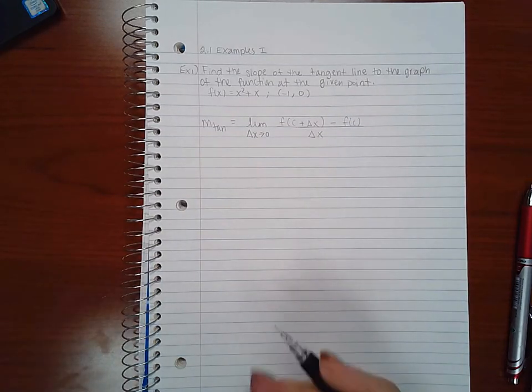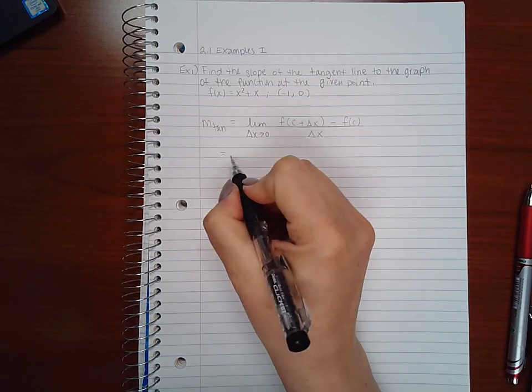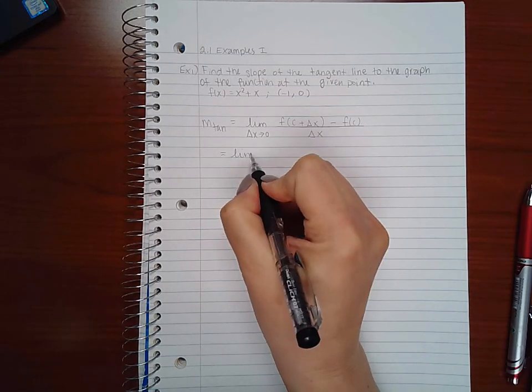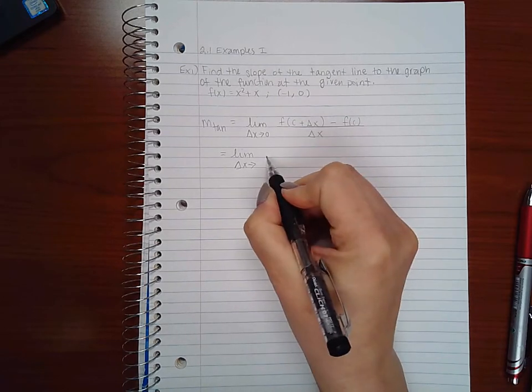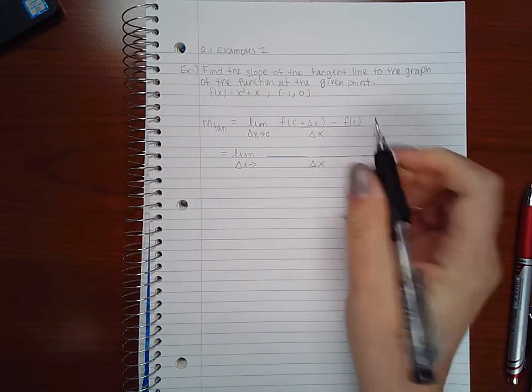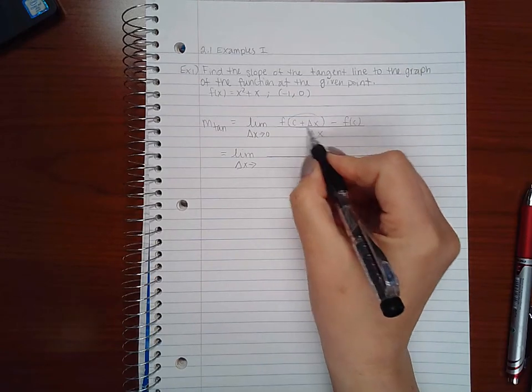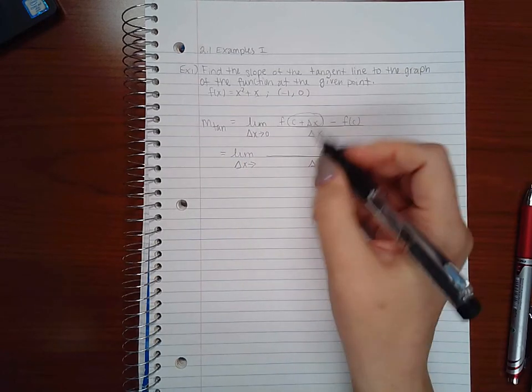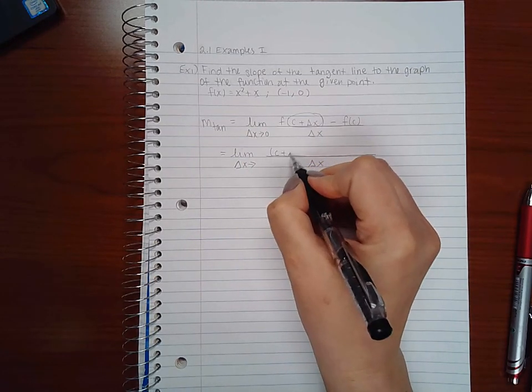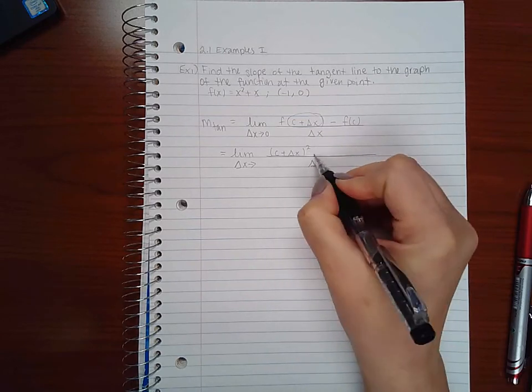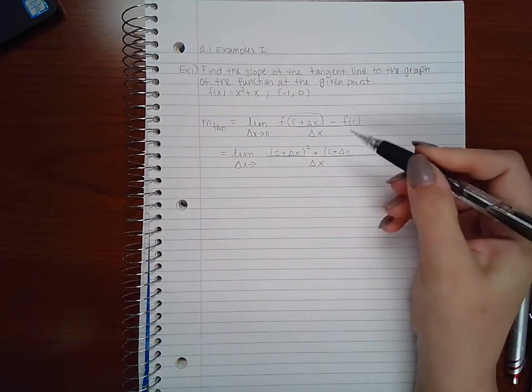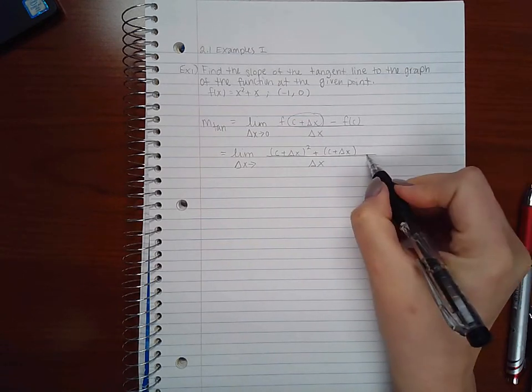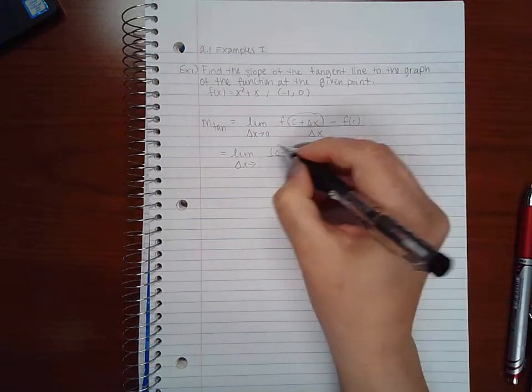So we've got to calculate this limit. Now because our function is x squared plus x, that will help us to figure out what to put in our numerator. Then if I'm plugging this in for x here and here, I will get c plus delta x squared plus c plus delta x minus, so that's all for this function here.